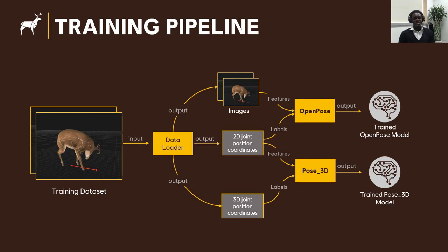Using those synthetic data, we retrained two machine learning models originally designed for human 2D and 3D pose estimation. The first model for 2D pose estimation is OpenPose. It infers 2D coordinates of joints from a single image by predicting the heatmap of each joint together with a part-affinity field vector that represents the relationship between joints that are connected. During the training phase, we use the images as features and the 2D image coordinates as labels for that model.